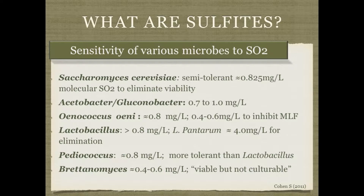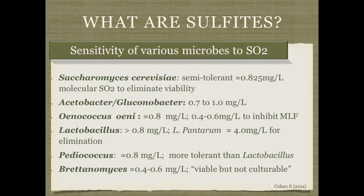Some microbes are more sensitive to sulfite than others. Saccharomyces cerevisiae, the yeast we use, is semi-tolerant — important because when making wine with fruit, you can sulfite the must and 24 hours later pitch your selected yeast. Selected wine strains are often chosen to be even more tolerant of sulfites than wild Saccharomyces. It's important to keep free molecular sulfites within a certain level to minimize the chance of unwanted infections.